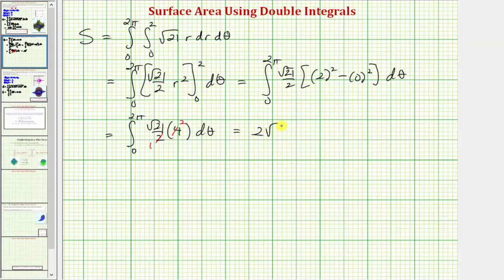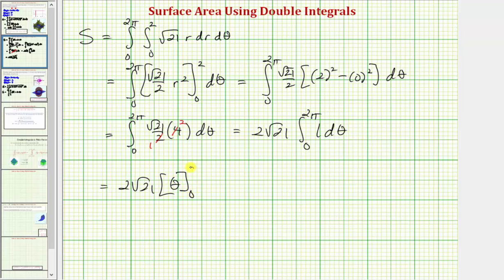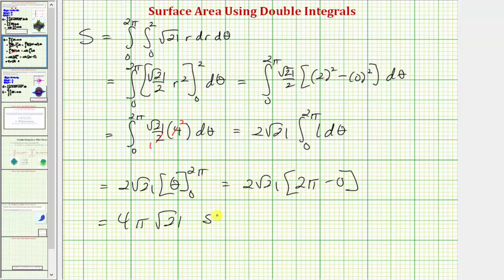So we have two square root of twenty-one times the integral from zero to two pi of one dθ. The antiderivative of one with respect to theta is just theta. Evaluating from zero to two pi gives two pi minus zero. Therefore, the exact surface area equals four pi times the square root of twenty-one square units.